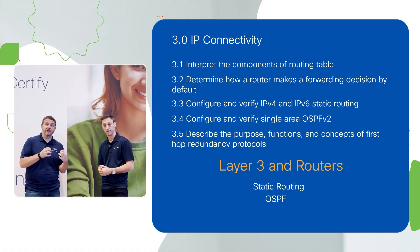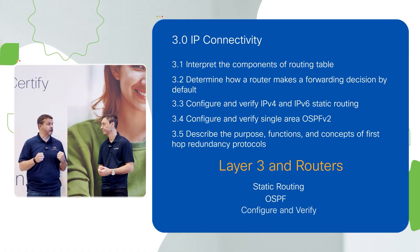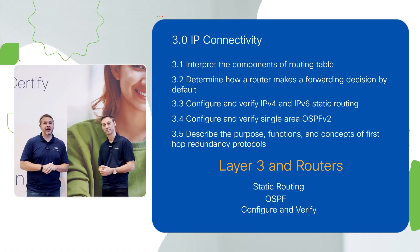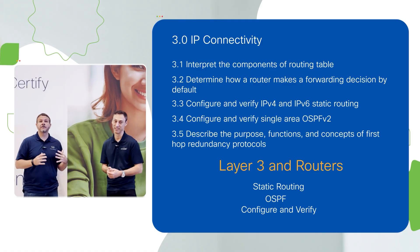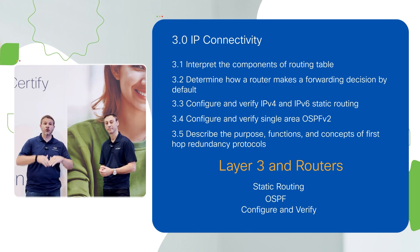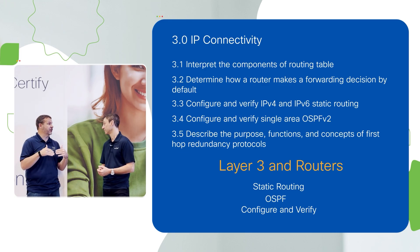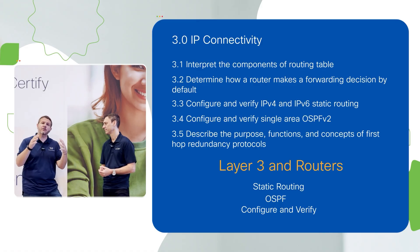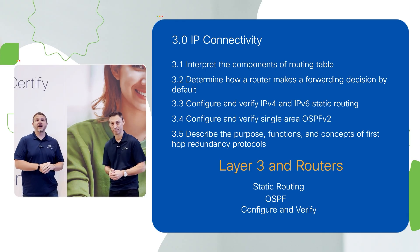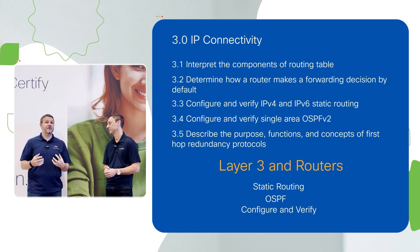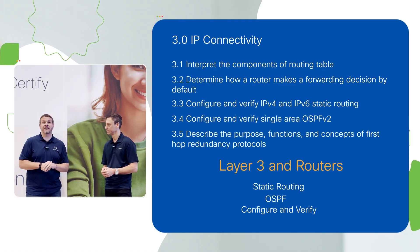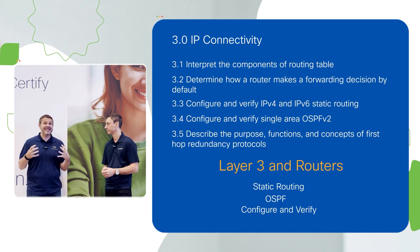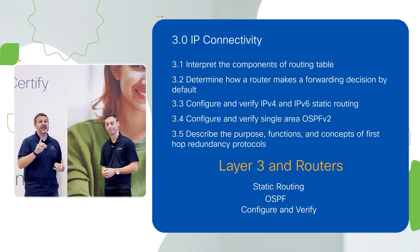You're going to have to be able to configure and verify both static and OSPF routing. Task 3.1 is to interpret the components of the routing table — a critical aspect of the CCNA. There will be plenty of questions where you're shown a routing table and asked where traffic would go for its next hop. You'll need to consider things like administrative distance and longest prefix match, which ties back to Domain 1 topics on IP addressing and subnetting. Synthesizing information across domains is something you'll have to do as a CCNA.